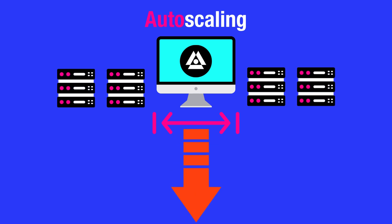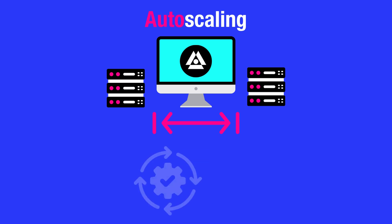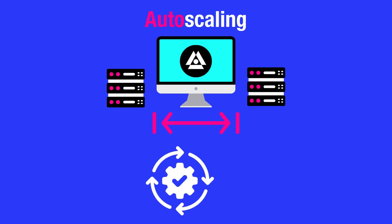If it needs to scale down, then it removes nodes. If it needs to maintain the network size, then no nodes are added or removed. This ensures efficient resource utilization and cost-effectiveness while maintaining optimal performance.